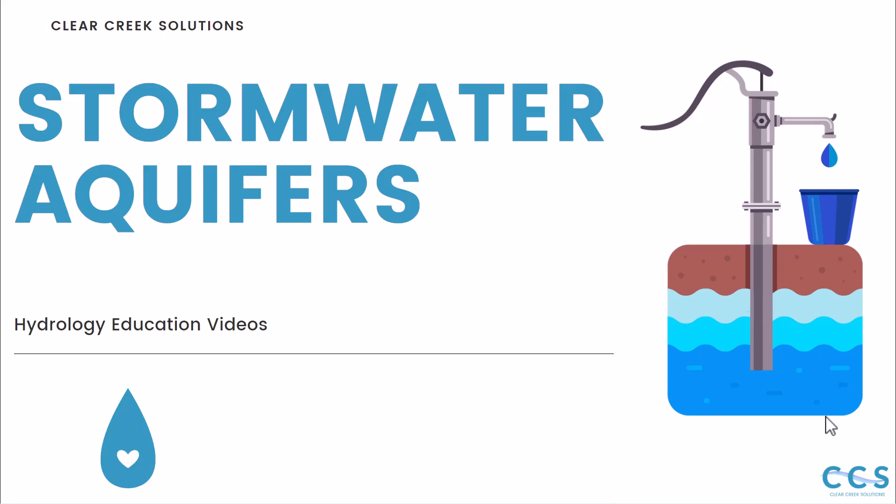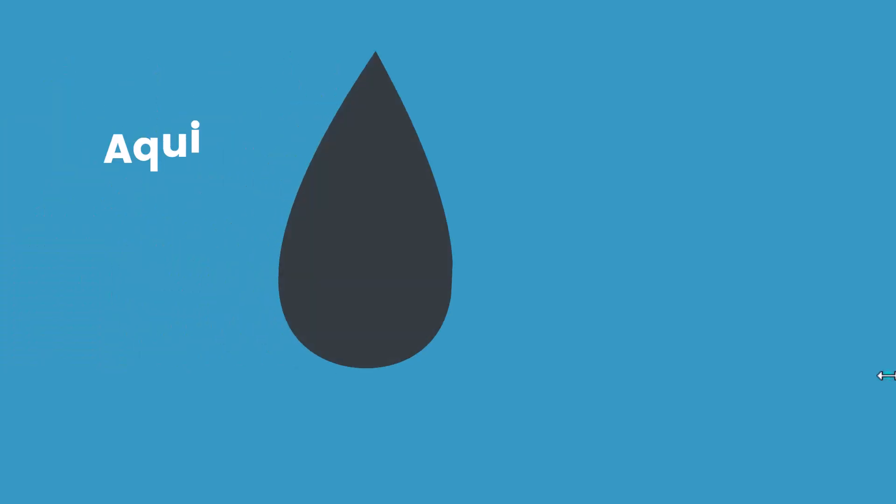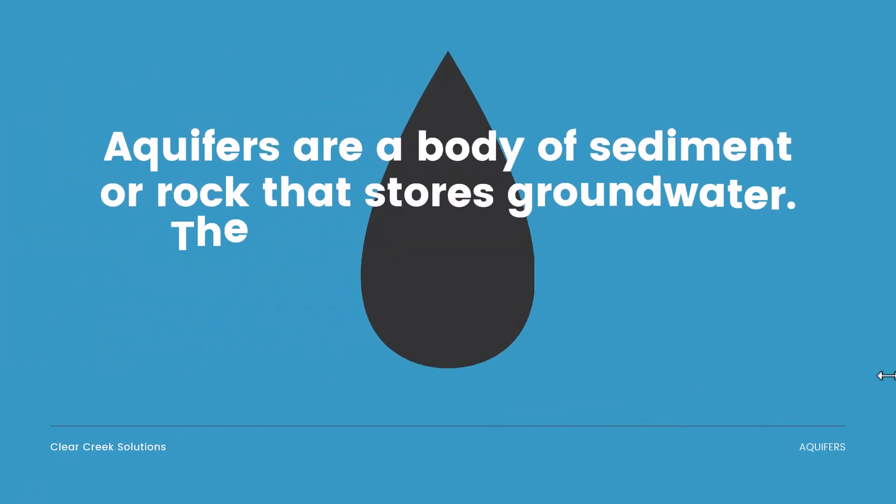If you want more information on the different methods of hydrology that we find in the industry, you can download our Ultimate Hydrology Guide, which is in the description down below. It gives you an overview of all the aspects of hydrology and calculation. So go ahead and download that. Let's get into the topic today, which is stormwater aquifers.